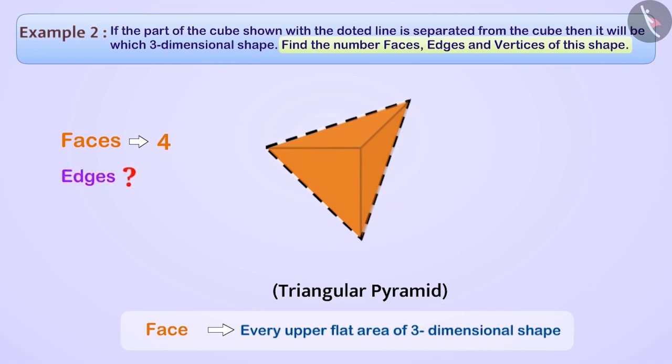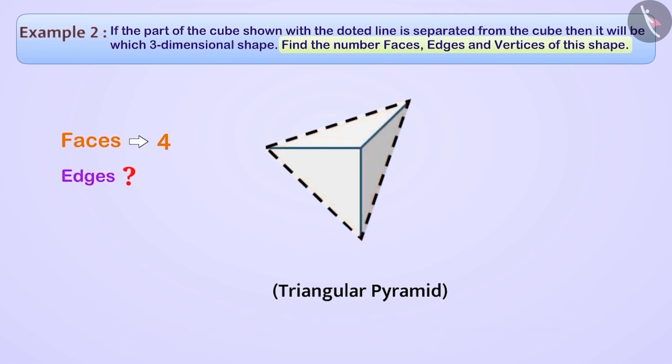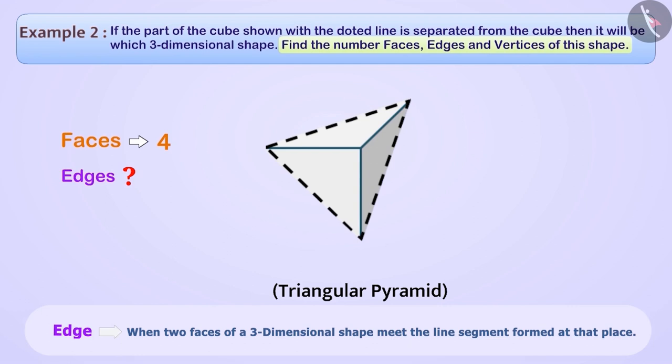Now let's identify the edges. Can you tell, what are the edges of a three-dimensional shape? Think, think! Absolutely right! When two faces of a three-dimensional shape meet, the line segment formed at that place is called one edge of the three-dimensional shape. As you can see, there are a total of six edges.